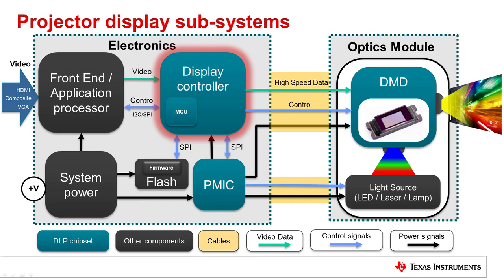The display controller processes video input from different interfaces such as RGB parallel, FPD-Link, V-by-One, or DSI, and it properly scales, flips, and/or rotates the image prior to display. The controller also converts the video frames to pixel-level high-speed data that is compatible for projection, and it provides configuration and controls via I2C or SPI interface.